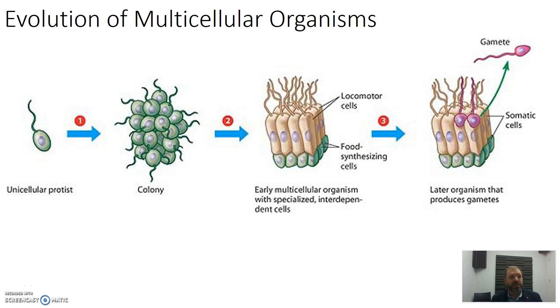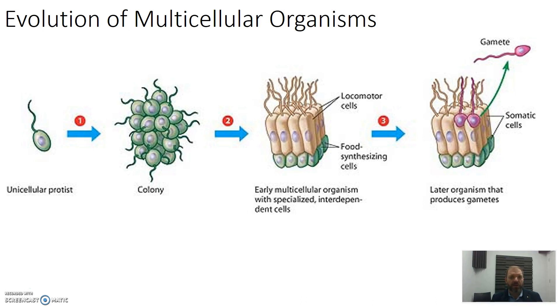We now have the beginnings of a multicellular organism, which might reproduce asexually by splitting. The final stage is moving towards a multicellular sexually reproducing organism, where a different type of specialised cell — the gametes — can separate from the original organism and fuse in a fertilisation process to make a new organism. Although highly compressed, we see the steps from being unicellular, to a colony, to an asexually reproducing organism, to one that reproduces sexually.